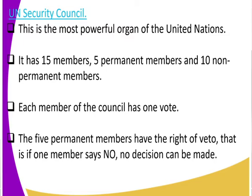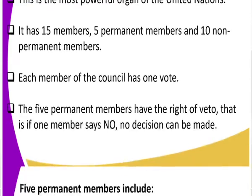This is called the veto power. What is veto power? It simply means that if one of the five permanent members does not agree to a certain decision — if one votes no — then that decision cannot be made. All five permanent members must agree. If one goes contrary to the others, a decision cannot be made. That is what we mean by veto power, and only the five permanent members hold this veto power.